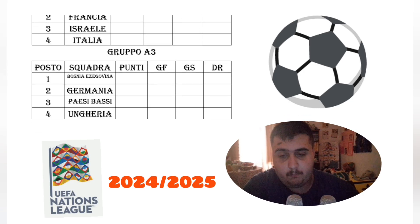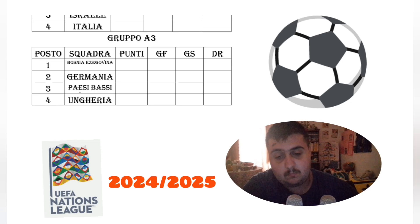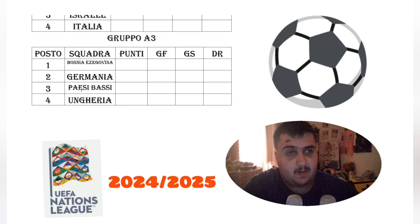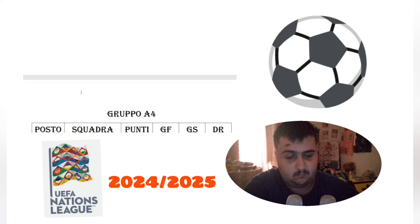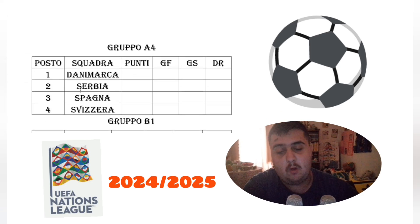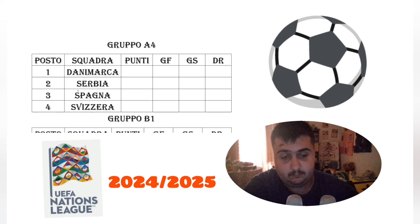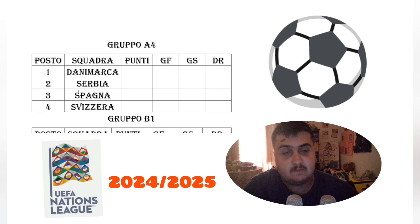Group A3 has Bosnia and Herzegovina, Netherlands and Hungary. Group A4 has Denmark, Serbia, Spain and Switzerland.